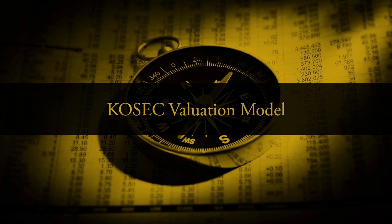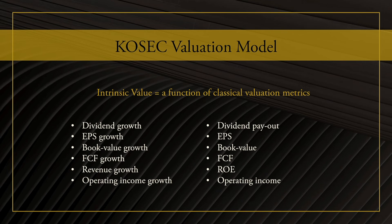We have looked at several classical models and the question becomes: is there a way to make a better model? We are excited to introduce the Cosec valuation model, which we believe outperforms the other models discussed. The main idea is to use more metrics as part of our valuation, taking all of a company's different facets into consideration. Some of the metrics we use include dividend growth, earnings per share growth, book value growth, free cash flow growth, revenue growth, and operating income growth — indicating how well a company is growing. We also use dividend payout, earnings per share, book value, free cash flow, return on equity, and operating income to show how the company is positioned right now. Combining all of these, we get an estimate of the intrinsic value using the Cosec valuation model.